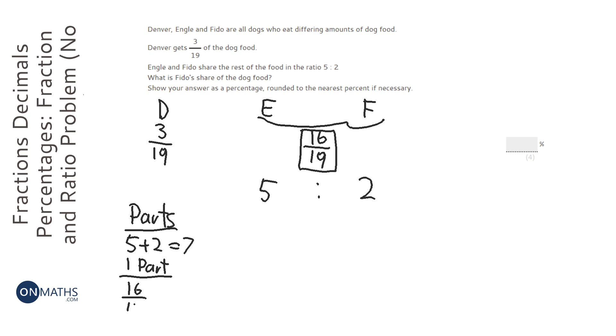it's 16 over 19, divided by 7. So 16 over 19 on the calculator, divided by 7, which gives us 16 over 133. So that's the fraction of each part. Now, it says, show what is Fido's share. So we're looking for Fido's share.